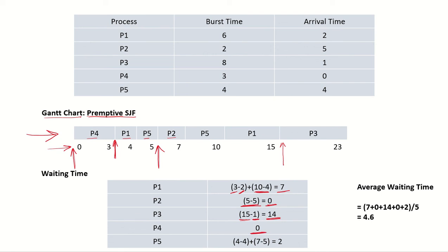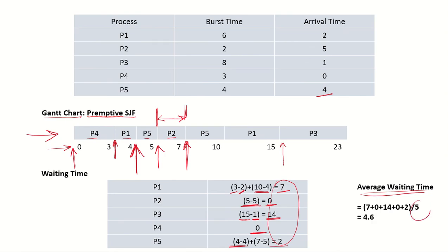For P5, it got the CPU at time unit 4 and arrived at 4, so initially its wait time was 0. But after releasing the CPU, it had to wait from 5 to 7 to get back the CPU, adding 2 more time units of waiting. To compute the average waiting time, we take the total of all wait times and divide by the number of processes to get an average wait time of 4.6.